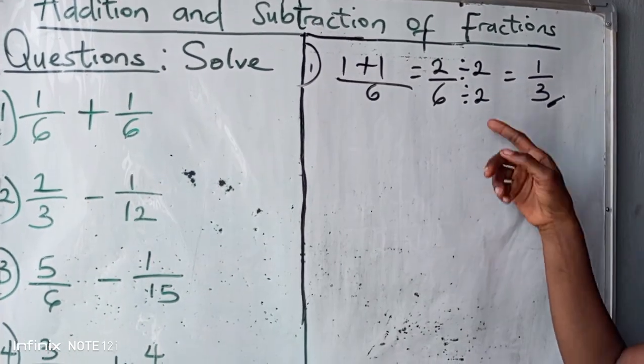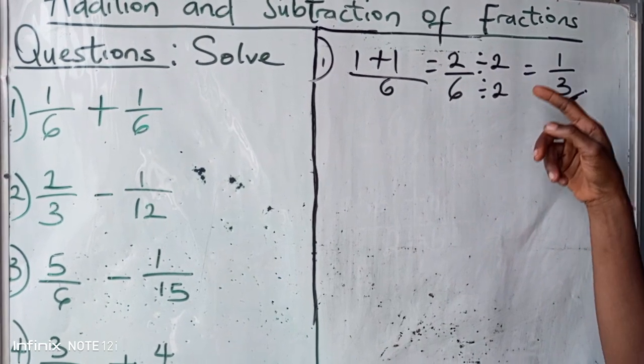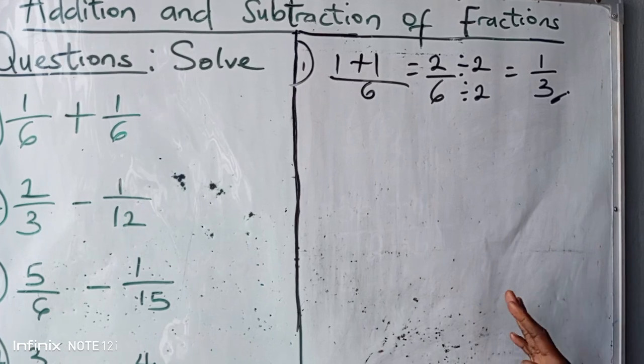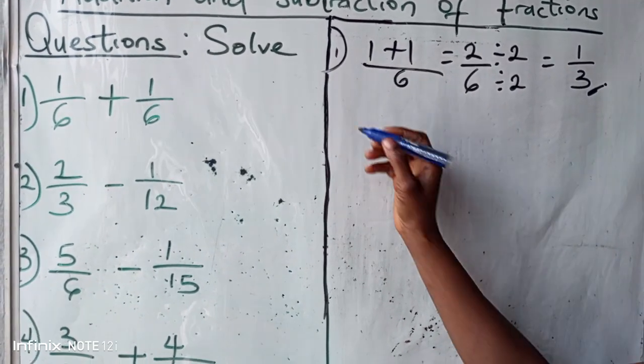This is your final answer. Please, when you are reducing to lowest form, do not use different numbers. Look for the same number that would divide both the numerator and the denominator successfully without remainder.